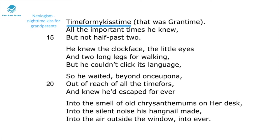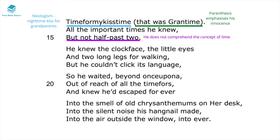Here again there are more neologisms. 'Time for my kiss time' is a night-time kiss the child remembers reserved for grandparents — 'that was grand time' — with the parenthesis emphasising this child's innocence. In line 15, 'but not half past two' is repeated, showing the child truly doesn't comprehend time and feels this is almost like a jail sentence — banished to a room, not knowing until when.